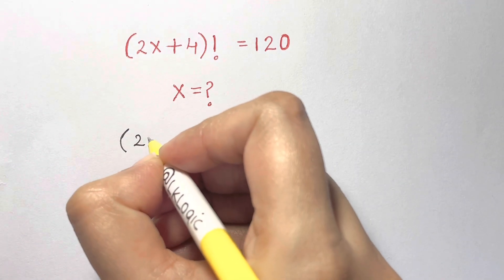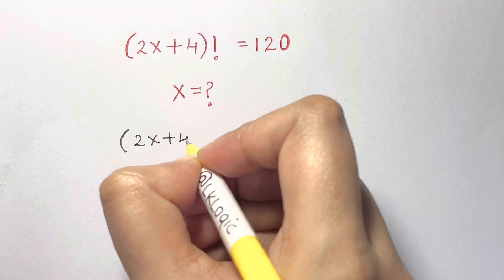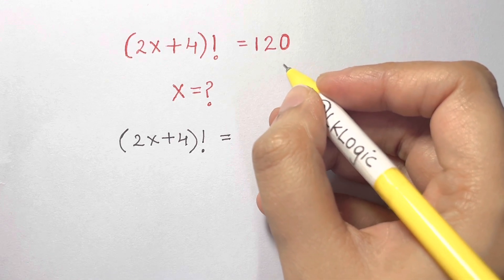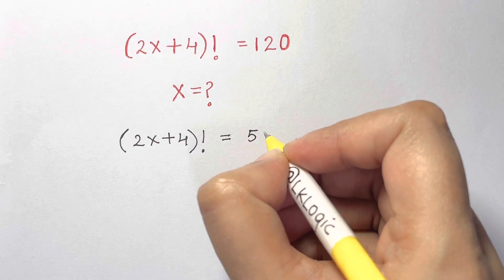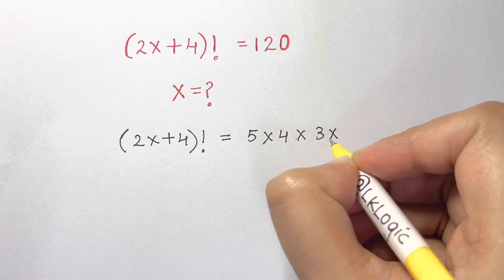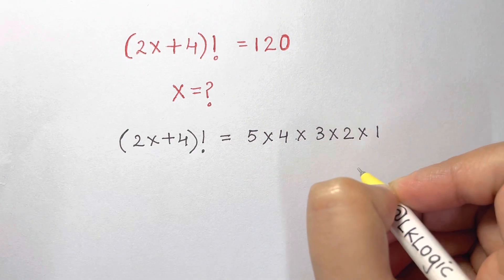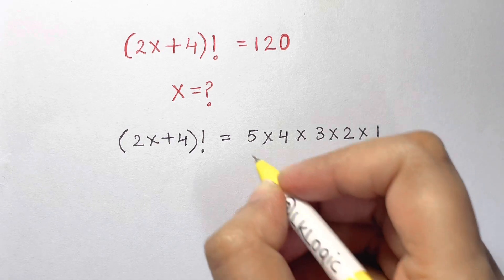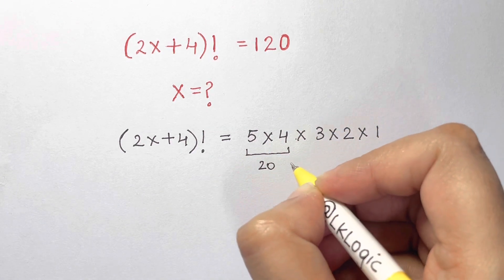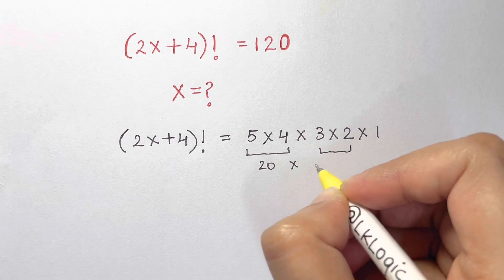120 can be written as 5 × 4 × 3 × 2 × 1. Now if you see, just multiply and check: 5 × 4 is 20, times 3 times 2 is 6, so 20 × 6 gives you 120.